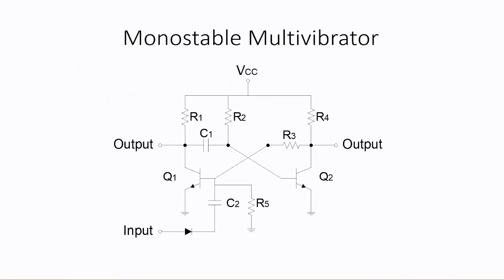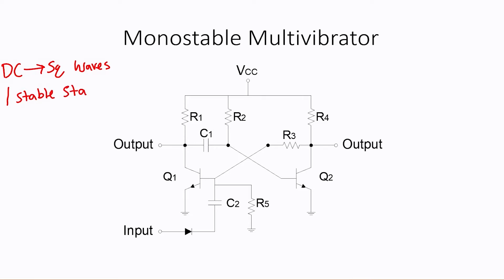Now let's take a look at the monostable multivibrator. Again, the purpose is the same — we're going to turn DC into square waves. The only difference is, with the monostable, we actually have a stable state, which means it requires a positive input trigger pulse to throw it out of its stable state to generate square waves. The input diode, located at the bottom of the circuit, ensures that we only receive a positive pulse, because if a negative pulse comes through, it will reverse bias that diode and will not allow it to pass.